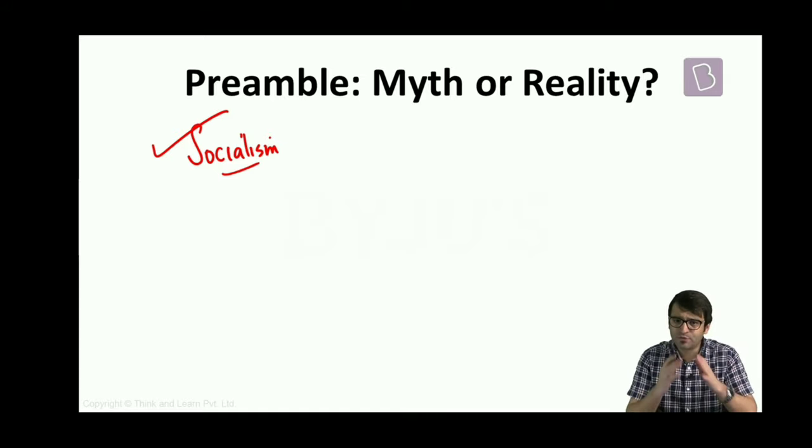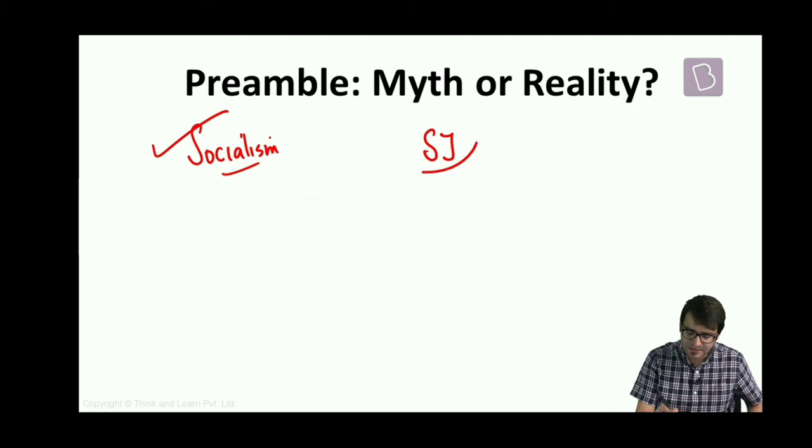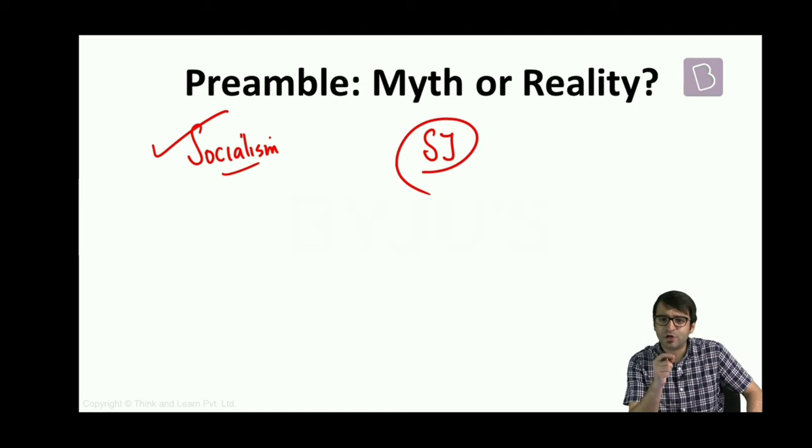If the objective of the Indian constitution is social justice, then why is it that the members of the Dalit community are attacked and flogged in different parts of the country?